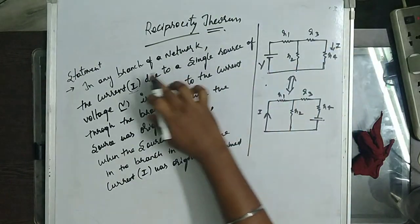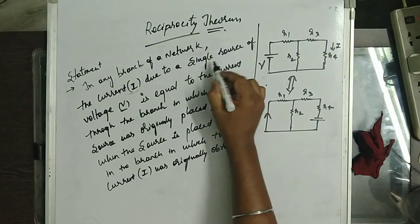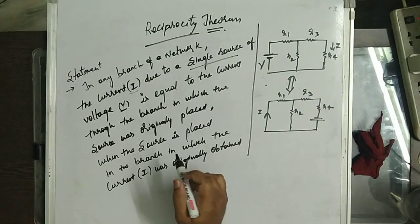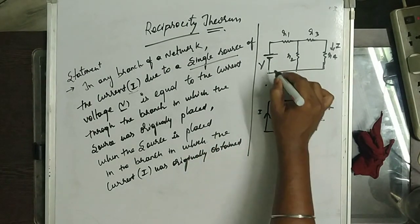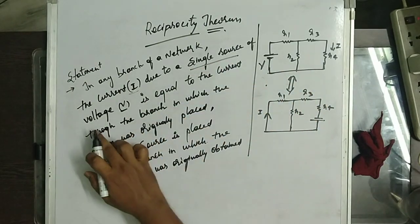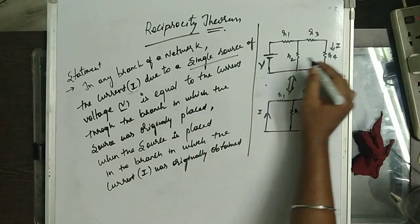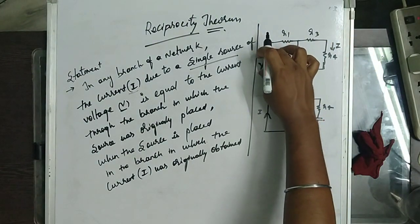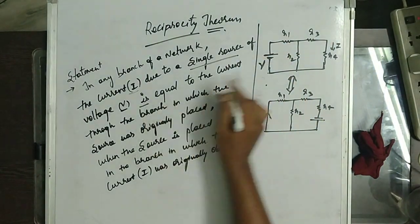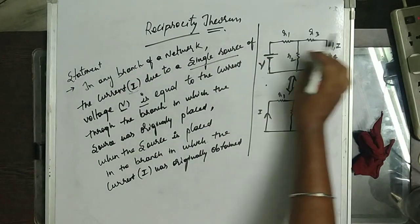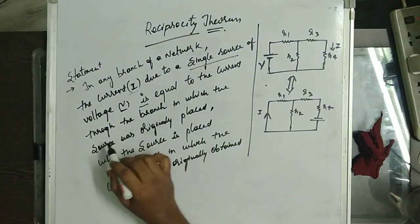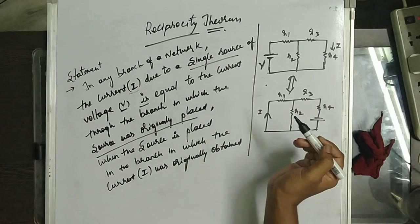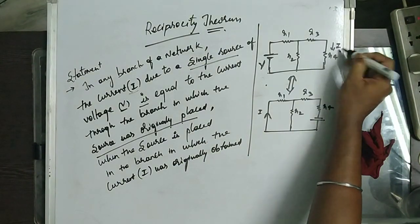In any branch of the network, the current response due to a single source only — only a single source should be present. That is the main thing we are dealing with in the reciprocity theorem. Only a single voltage source should be present. The response here, taking current I, is equal to the current through the branch in which the source was originally placed.